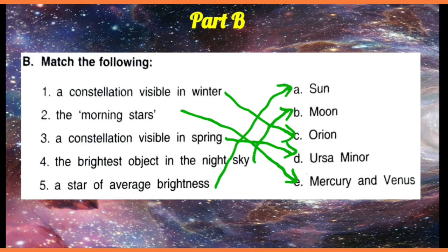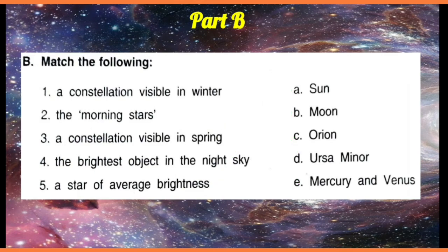We think the Sun is the brightest, but if we consider space as a reference, there are stars in space that are brighter than the Sun. However, those stars are very far away, and the Sun is comparatively close to us. That is why the Sun appears bigger and brighter to us, but the Sun is a star of average brightness.